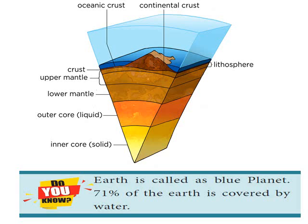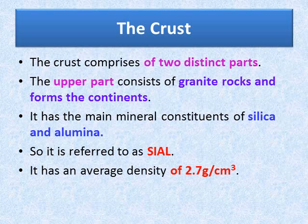Earth is called the blue planet because 71% of the earth is covered by water. The crust comprises two distinct parts. The upper part consists of granite rocks and forms the continents. Its main mineral constituents are silica and alumina, so it is referred to as SIAL. It has an average density of 2.7 grams per cubic centimeter.